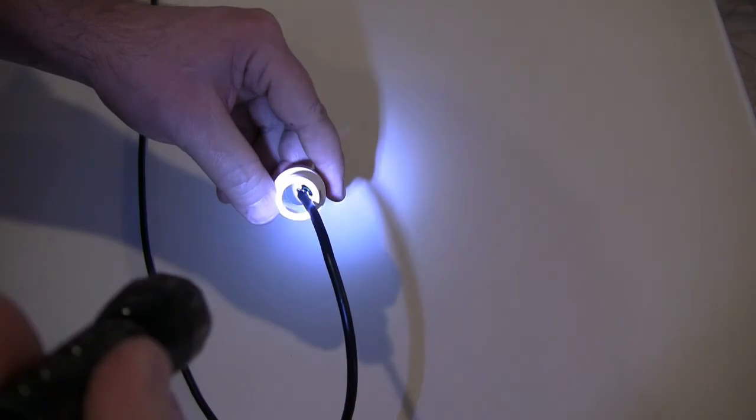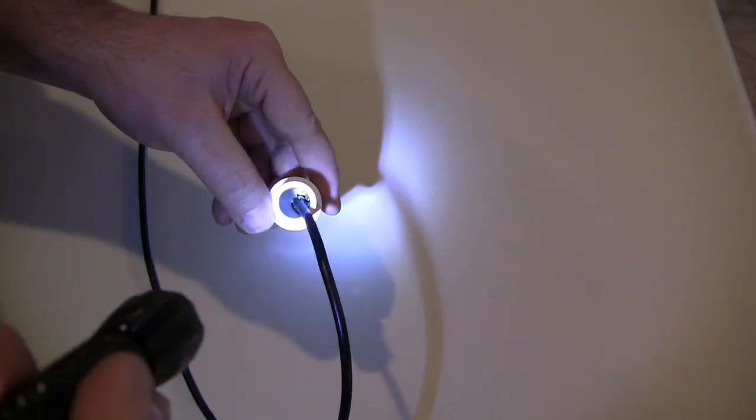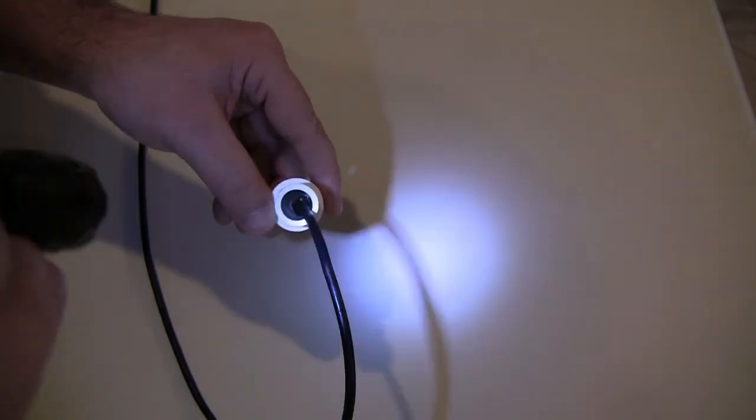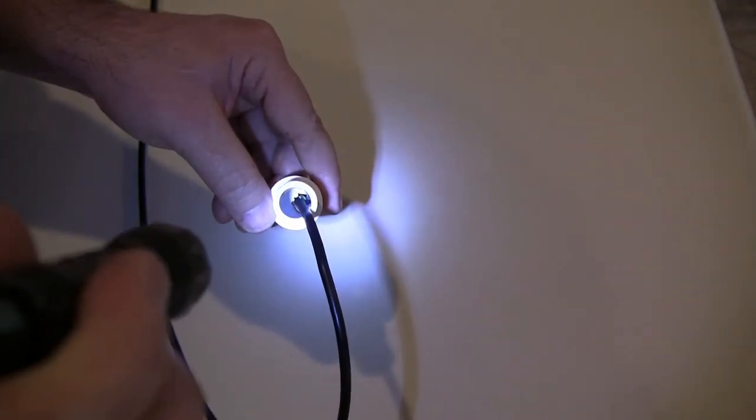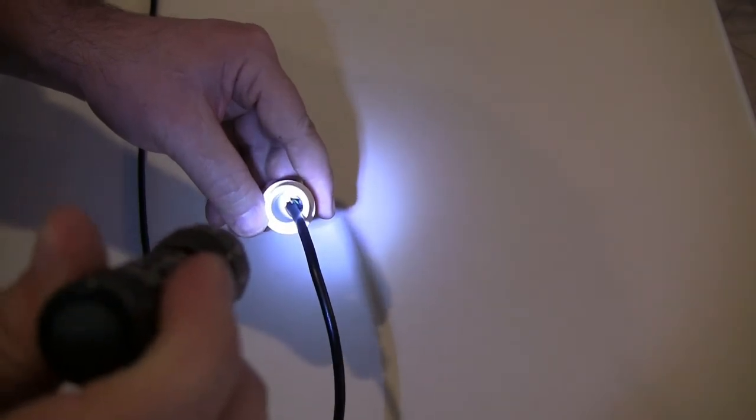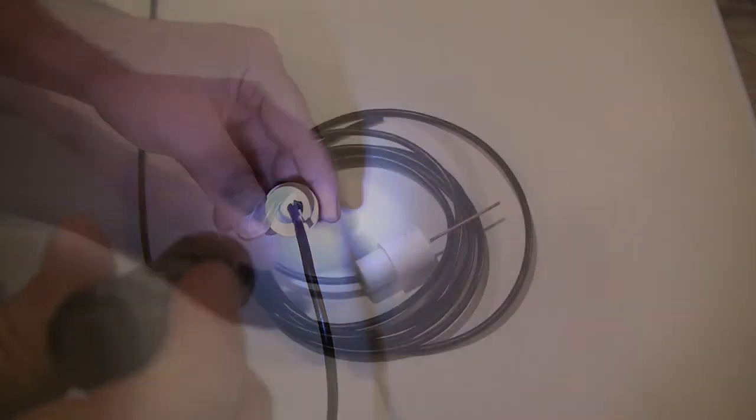The next step is to fill the pipe with epoxy to prevent water pressure at depth from cracking or imploding the PVC shell. For this sensor, I'm just going to use 5-minute epoxy that you can purchase from any good hardware store. Once it dries hard, this sensor will be impervious to pressure or water infiltration.